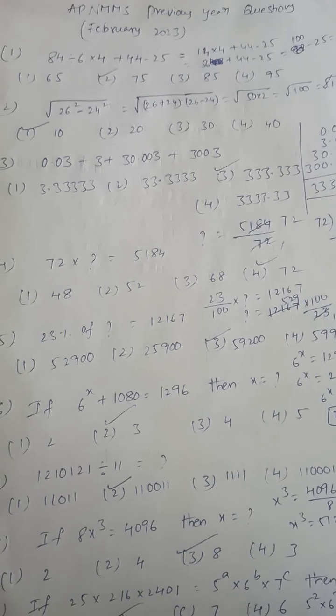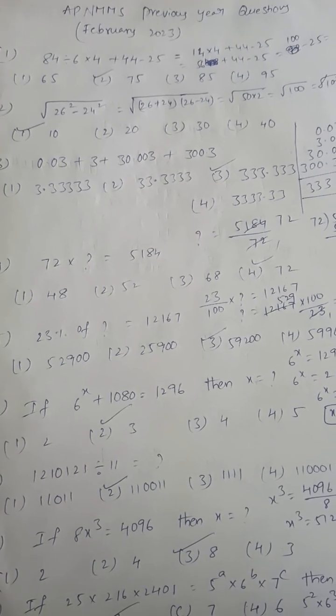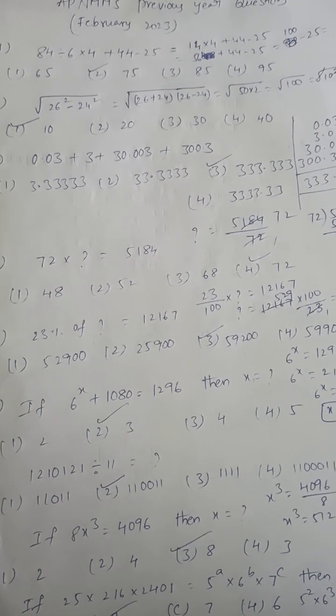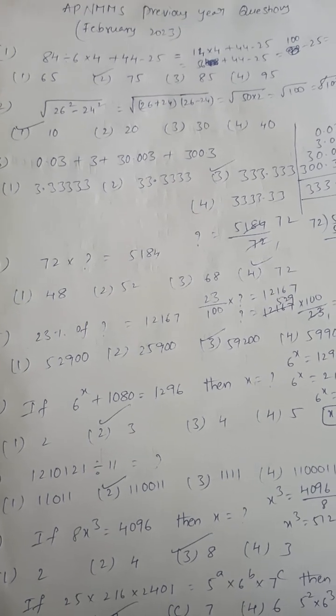Next, second question: square root of 26 square minus 24 square. Using A square minus B square equals A plus B times A minus B.